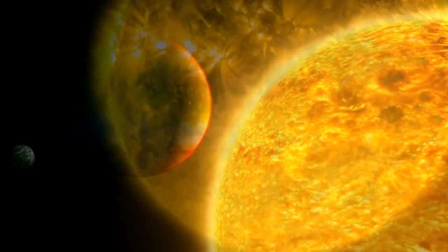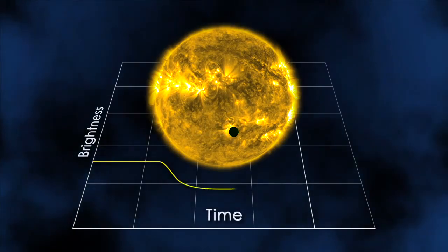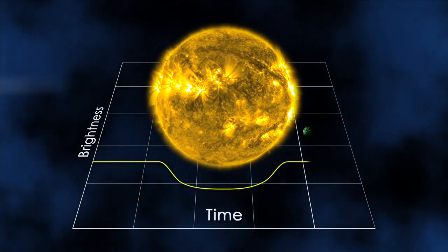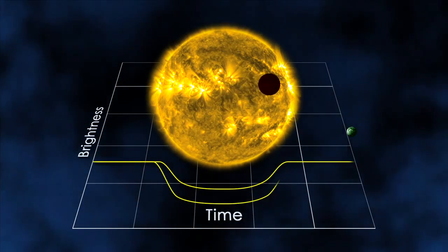For instance, when an exoplanet passes in front of its star, or transits, it blocks a fraction of the star's light and causes a dip in brightness. Large planets block more light, so the size of the dip can be used to determine the size of the planet.